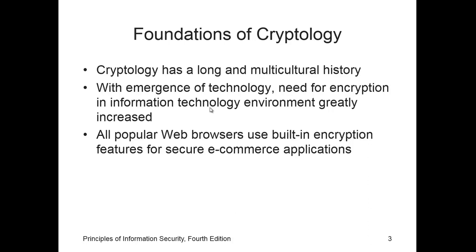The ciphertext is the unintelligible encrypted or encoded message resulting from an encryption — sometimes called a cryptogram. Code is the transformation of larger components — words or phrases — of an unencrypted message into encrypted components. A cryptosystem is the set of transformations necessary to convert an unencrypted message into an encrypted message. Decipher means to decrypt or convert the ciphertext into plain text — the opposite of hiding the message.